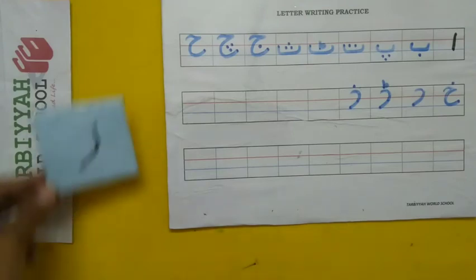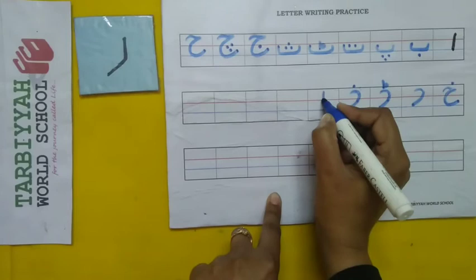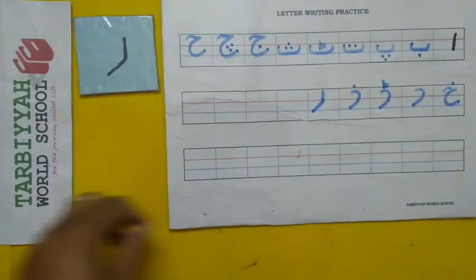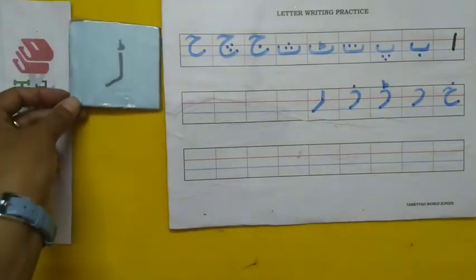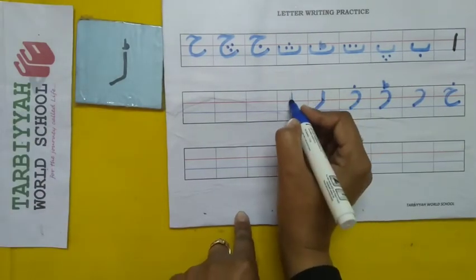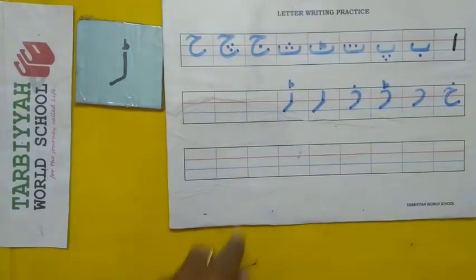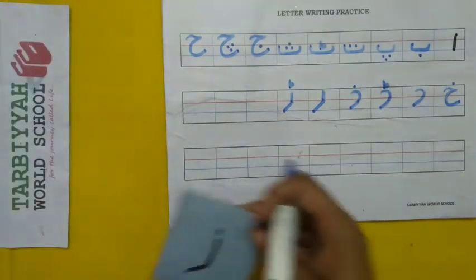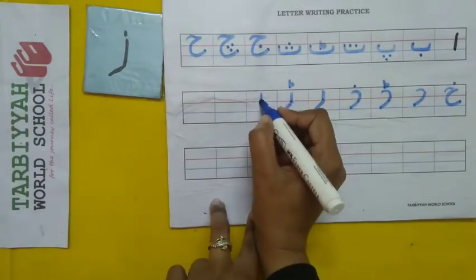Next — agla huruf. Re. So how do we write Re? Like this — Re. And what comes after Re? Yes, Re ke baad — Ade. So how do we write Ade? Same shape. Ade. And then the next letter is Ze. So how do we write Ze? Same shape.